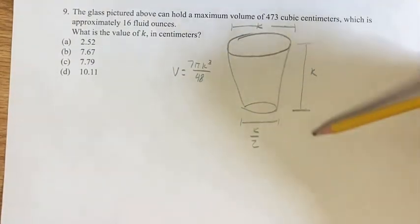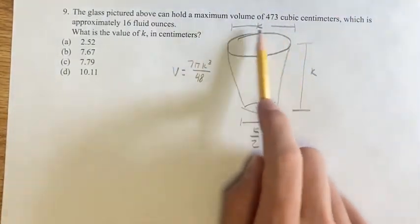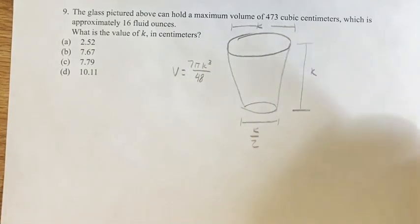So k we can see is the height of this glass, it's the diameter of the top of the glass, and it is twice the diameter of the bottom of the glass.